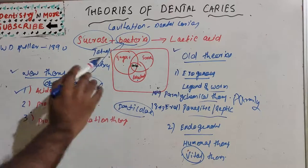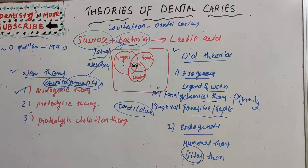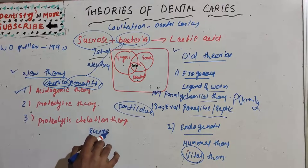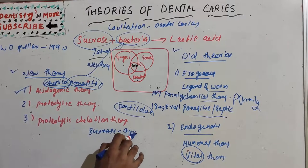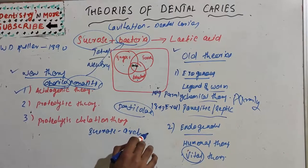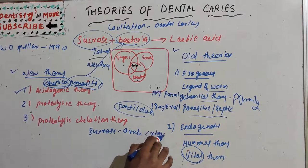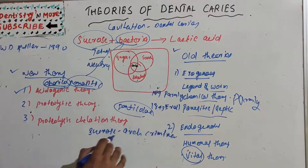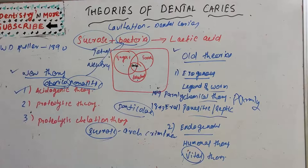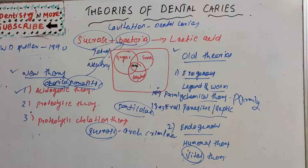The role of carbohydrates — particularly sucrose, which is also known as the 'arch criminal' — was also highlighted by Miller.